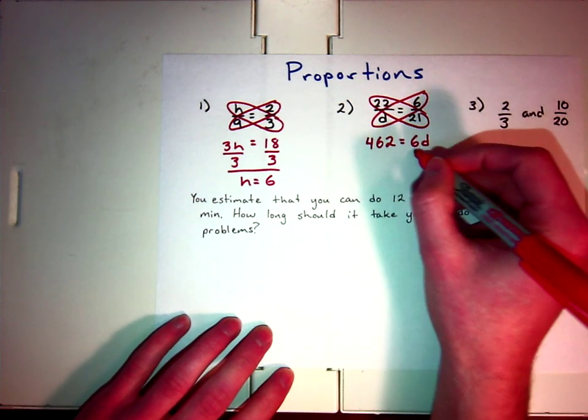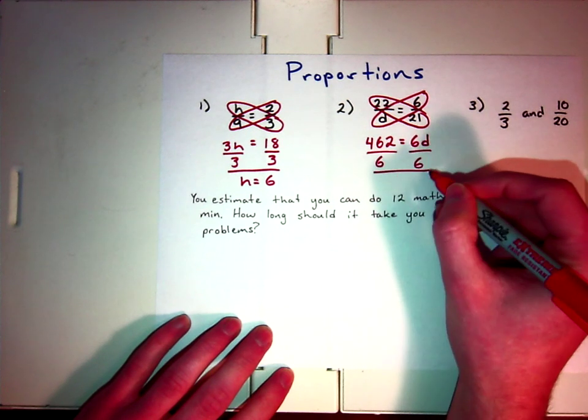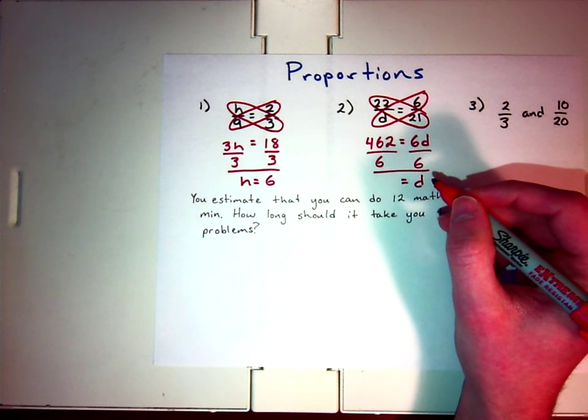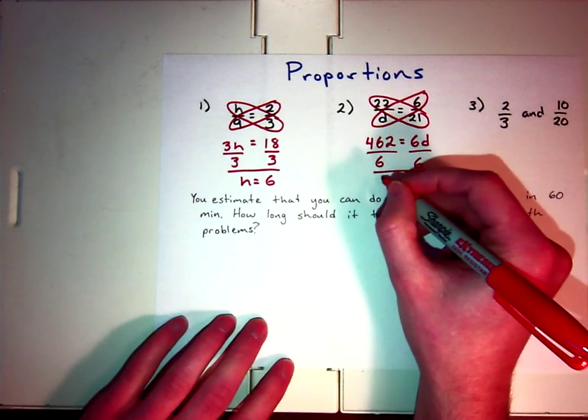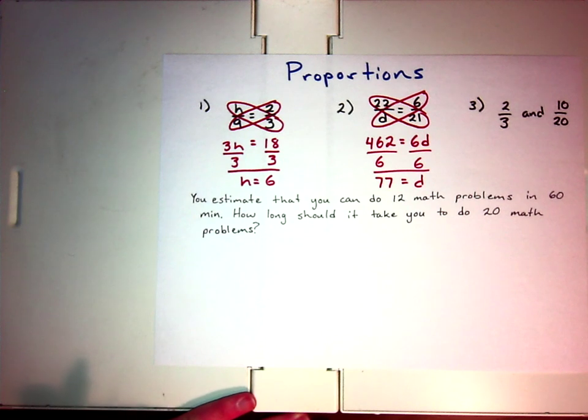So, I'm going to divide both sides by 6, since the variable is being multiplied by that. So, we're doing the inverse operation. And we get the answer of 77. So, D equals 77.